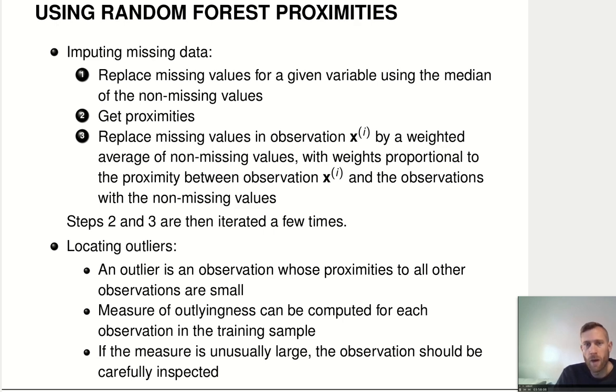Well, for example, we can run the following algorithm. We have some feature vector. We replace all the missing entries in the feature vector just by the median of the non-missing values. Okay? So, that's a very rough guess. Then we run that observation through our random forest. We get the proximities.